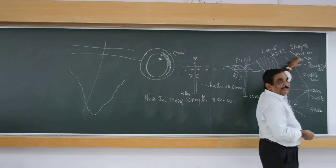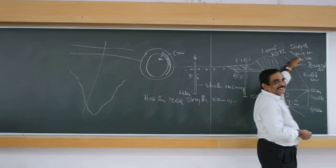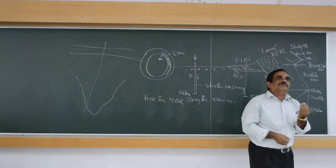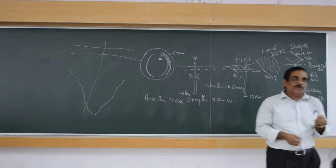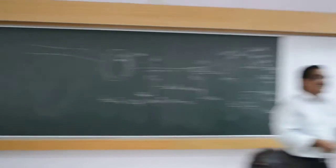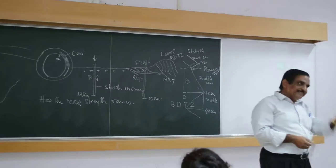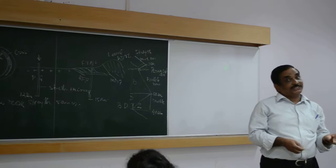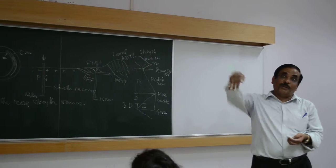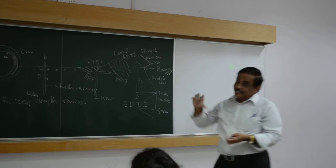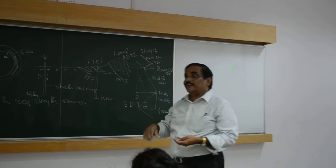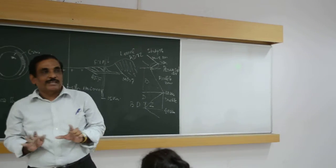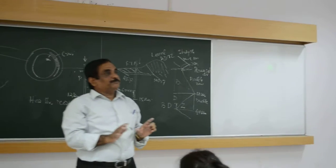Now, whatever local DBT you are getting — that is because of its composition. Though it is not in the ductile zone by depth, it behaves as a ductile material, producing those ductile structures. So this is a local DBT.